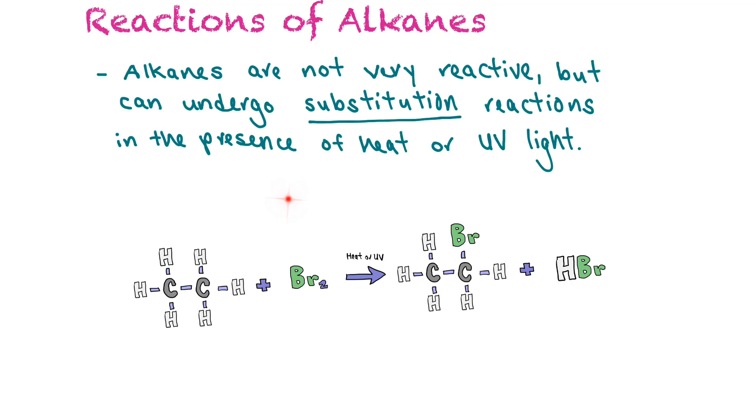But this is the general equation. So we have ethane reacting with bromine in the presence of UV. It can substitute one bromine or two, depending on the reaction. And so we end up with bromoethane and then hydrogen bromide as a side product.